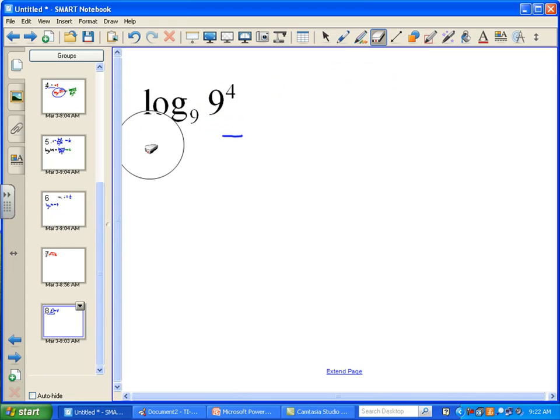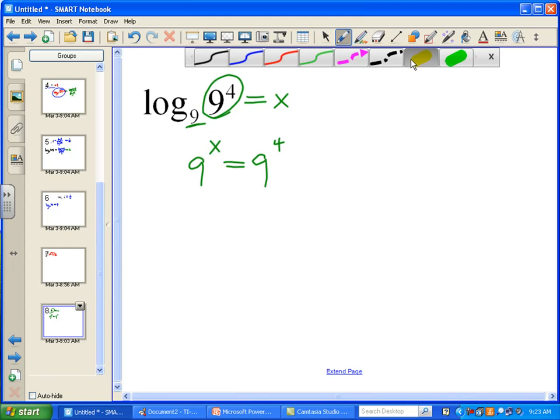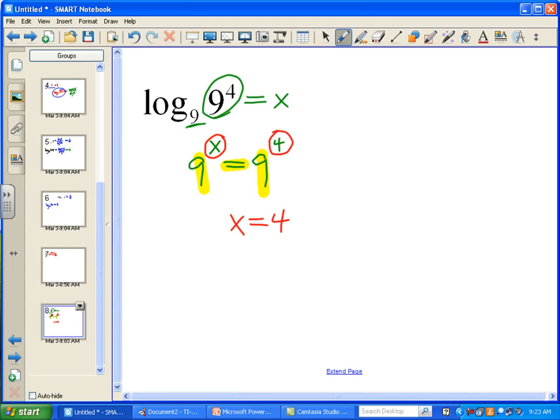We can also do this by algebra. We can set this equal to x because we don't know what it is. And it's in log form, so let's put it into exponential. So I'll take this number 9 raised to the power x is equal to this number 9 to the 4th power. And again, just like the last one, when we changed forms, this number matches this one. Both sides are equal. So it must mean that x has got to be equal to the number 4.